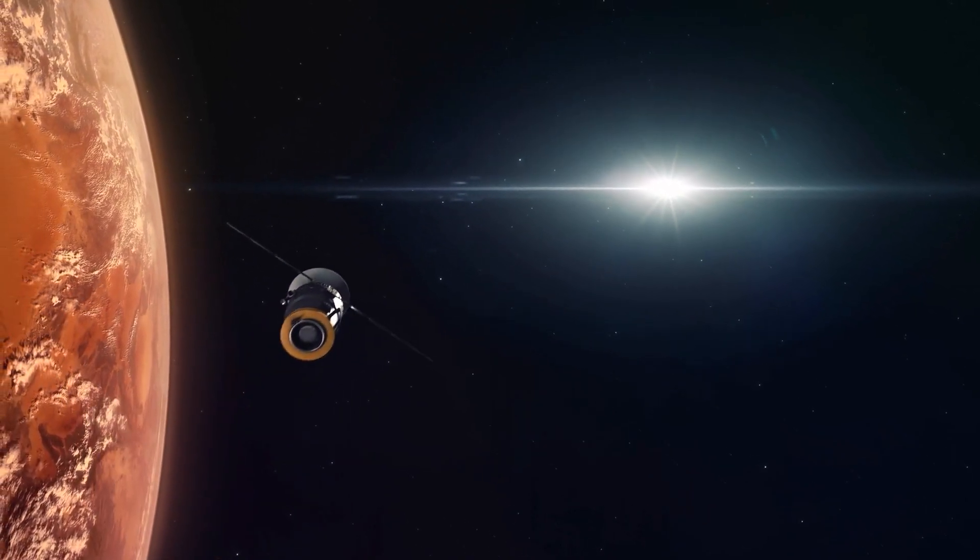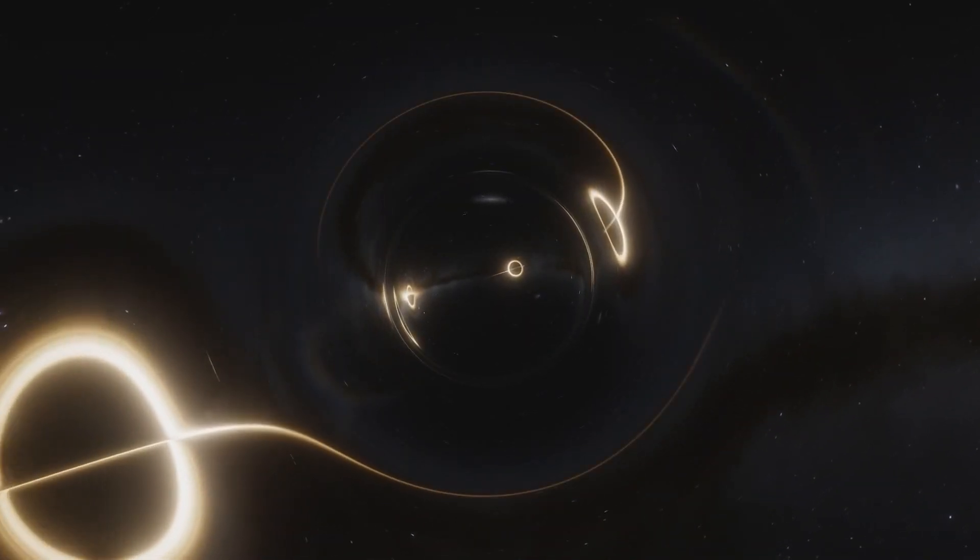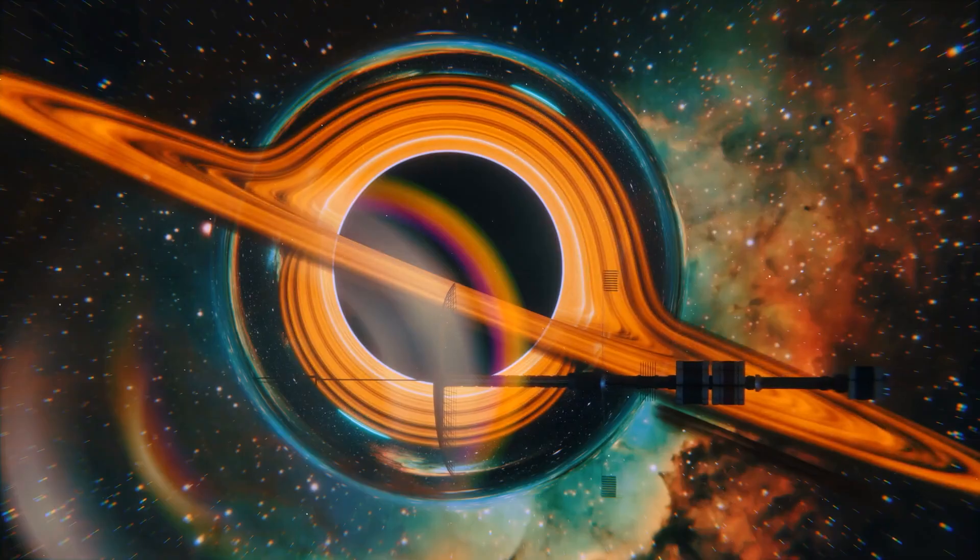These were expected to identify city lights on Proxima B and other worlds orbiting stars up to 30 parsecs away even more swiftly than the James Webb Space Telescope. His study was released only a few days after the researchers reported their findings.